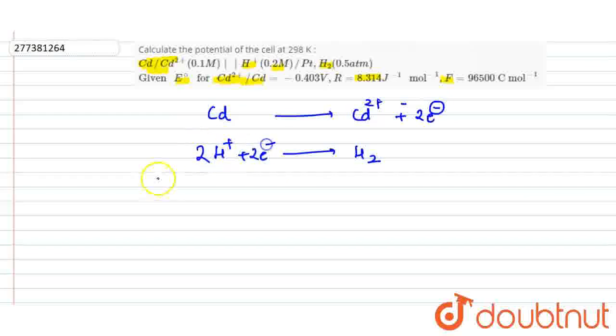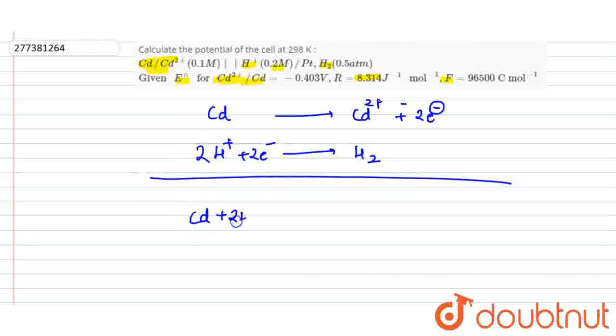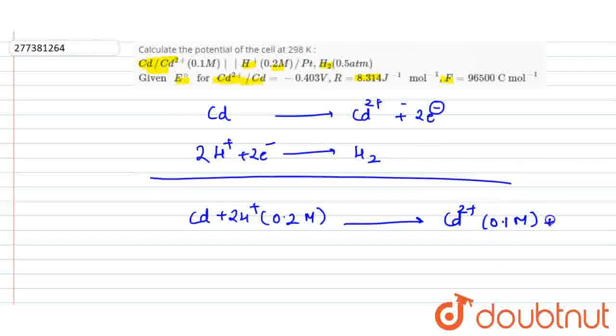What is the overall equation? Cadmium plus H-plus. And H-plus is 0.2 molar. 0.2 molar is 0.2 molar. And what is the right side? Cadmium 2-plus, which is 0.1 molar, plus H2. H2 is 0.5 atm.